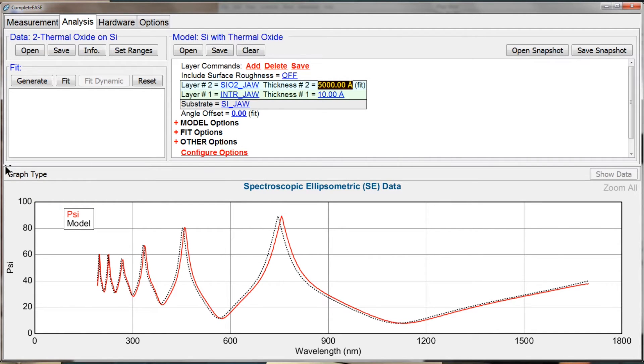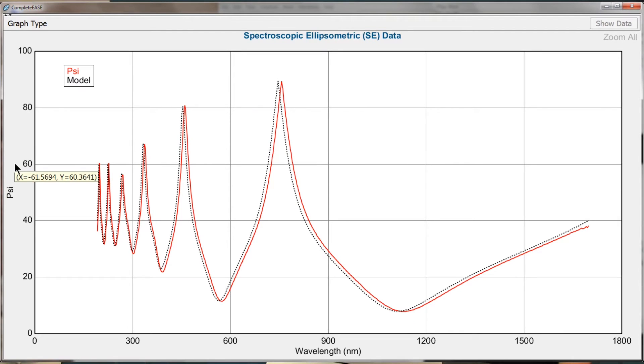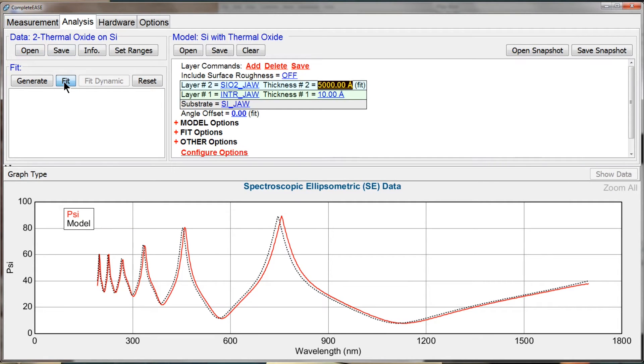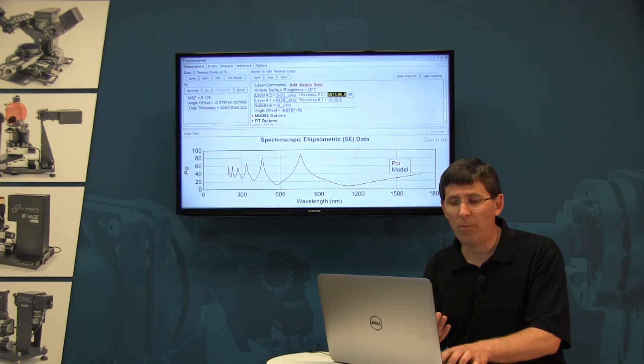I have the same number of peaks and the same number of valleys as my experimental measurement. That tells me that I'm pretty close to the correct answer. If I press fit, it should find that result.